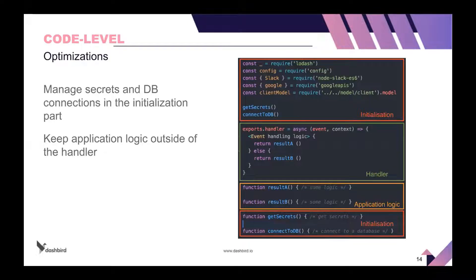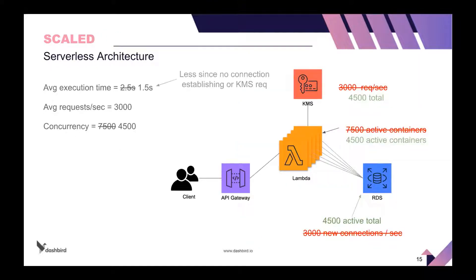Some best practices we've seen and suggested for our customers: keep everything you can in the initialization phase. Connect your database only once, cache the KMS queries so that each time you execute your function it only executes the main logic. Manage all the connections you can outside of the handler code. That already has a significant impact on execution time, because you don't need to establish the database connection anymore and you don't have to wait for KMS. Even an optimization of that size can drastically improve the active containers you have. Instead of 3,000 new connections every second, you would have 4,500 active total connections — which is a lot less.